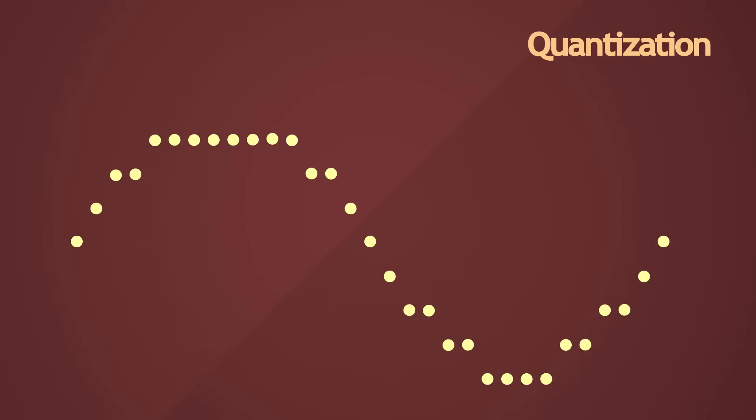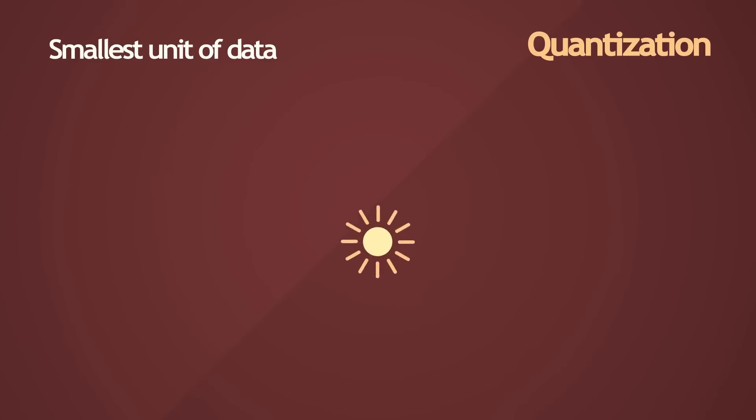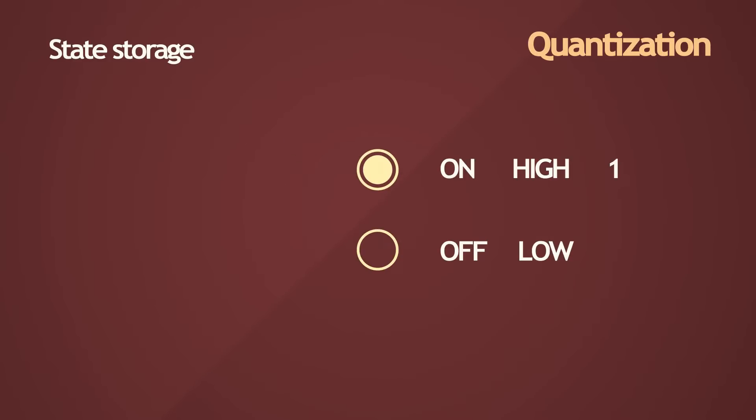Fundamentally, the smallest unit of data in electronics is a switch, or a binary bit, where data, or the state value, can be represented as either on or off, high or low. Two possible values, a binary system.